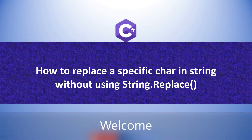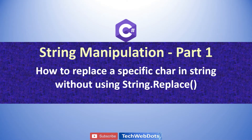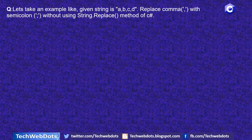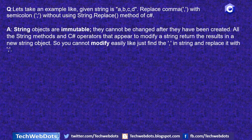Today I want to show you how to replace a specific character in a string without using the string.Replace method, which is very easily available in C#. This is part 1 of a string manipulation series. Let's take an example: given a string 'a,b,c,d', we want to replace comma with colon without using the string.Replace method.